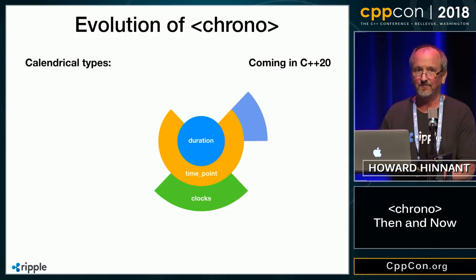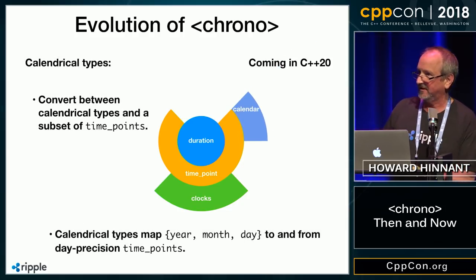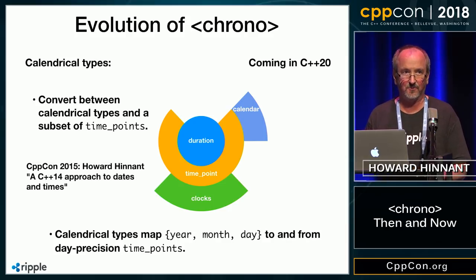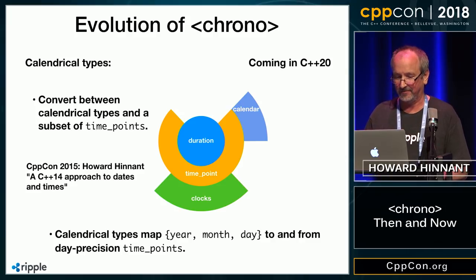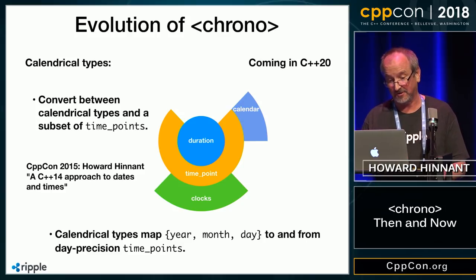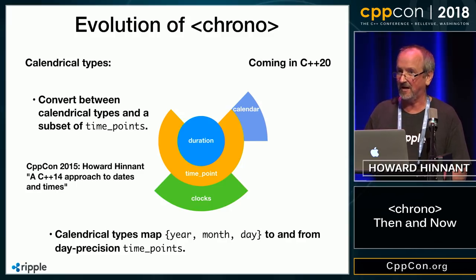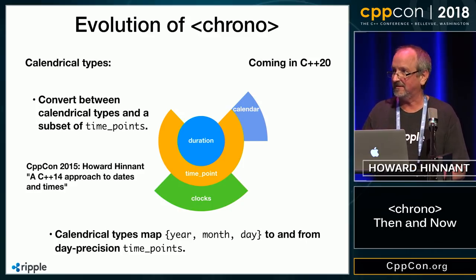One calendar will come with C++20, and that'll be the civil calendar. You can also write your own calendars — a Hebrew calendar, an ISO week-based calendar, or what have you. If you want to see more about how that's going to work, see my talk from three years ago, "C++14 Approach to Dates and Times." At that time we weren't sure whether this was going to be standardized, but the library turned out pretty well. A lot of people liked it, and it was proposed for standardization and voted into the working draft earlier this year.